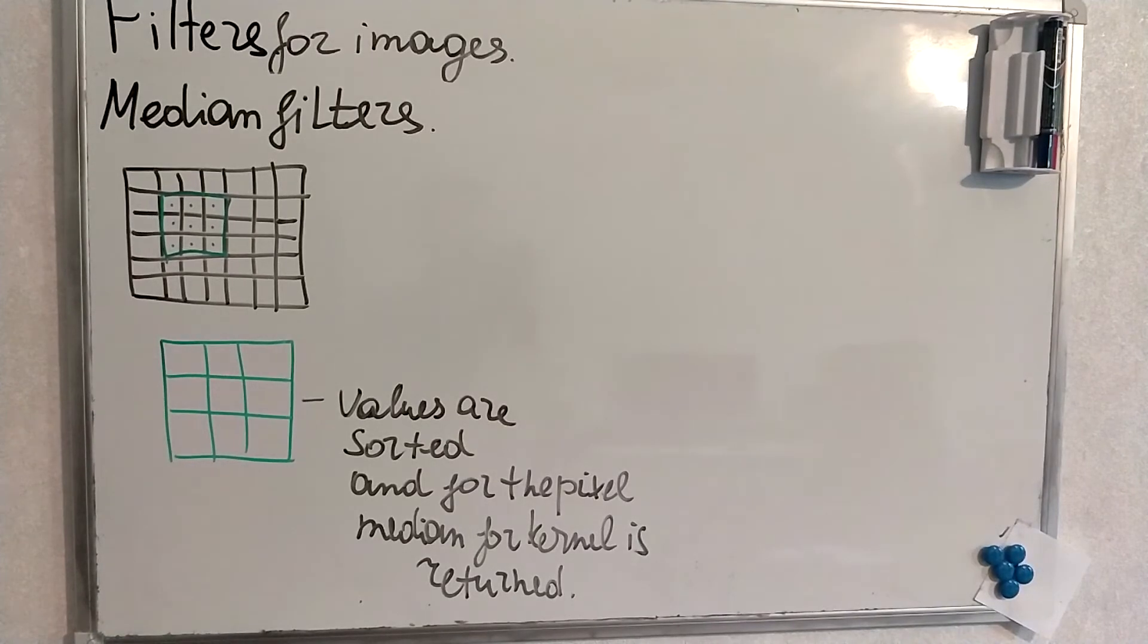And another very simple filter is median filter. I have drawn here the image on top and the green is the kernel. So median filter moves across the image and it gathers for each pixel 9 pixels.